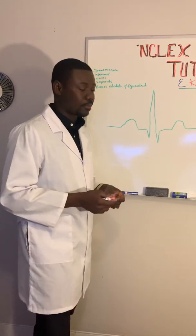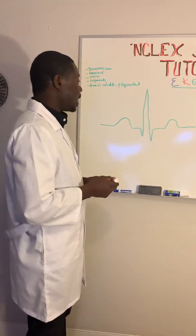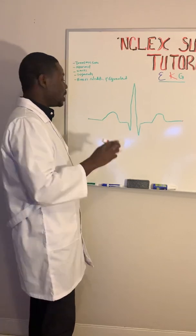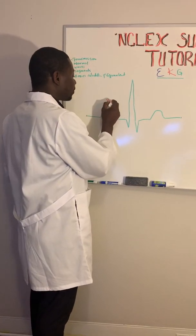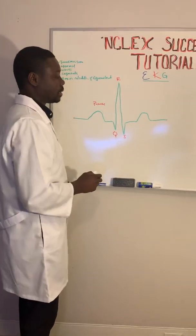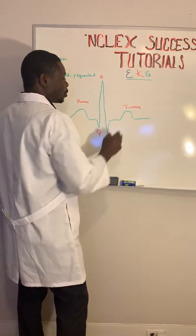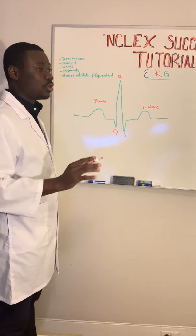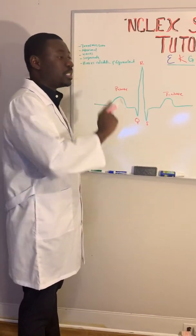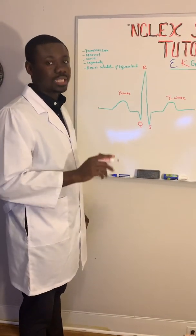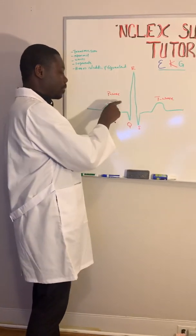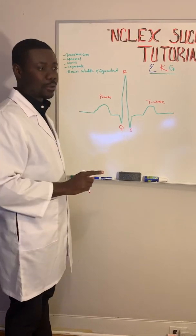Let's start with the normal EKG pattern. From one point to another, that represents one cardiac beat. In this cardiac beat we have the P wave, and we have the Q, R, and S waves — this is called the QRS complex — and we have the T wave. Every cardiac cycle, when the heart beats once and pumps blood from the right atrium to the left ventricle and into systemic circulation, should have one P wave and one QRS complex.